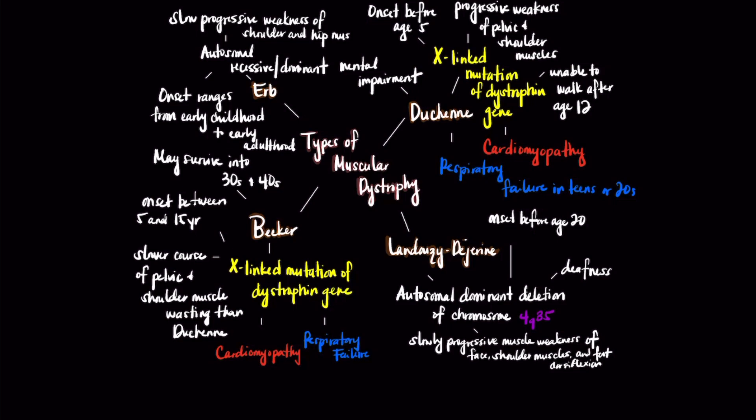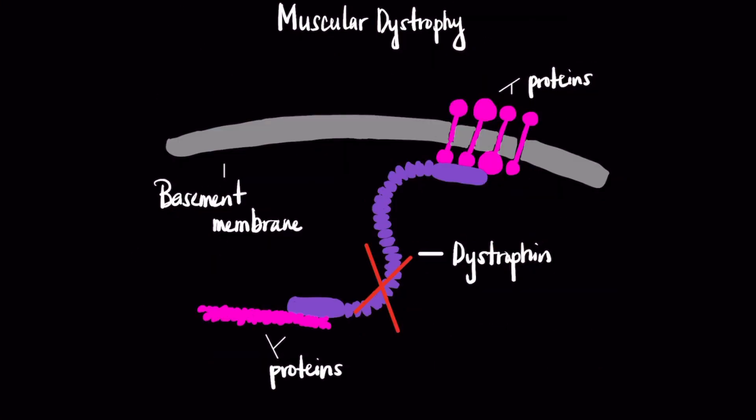In Herb's muscular dystrophy, it involves the shoulder and hip muscles with an autosomal recessive or dominant genetic basis. This picture depicts the role of dystrophin in that it assists in attaching muscle fibers and proteins to the basement membrane. In muscular dystrophy, there is an abnormality in dystrophin, which then leads to muscle fiber degeneration.